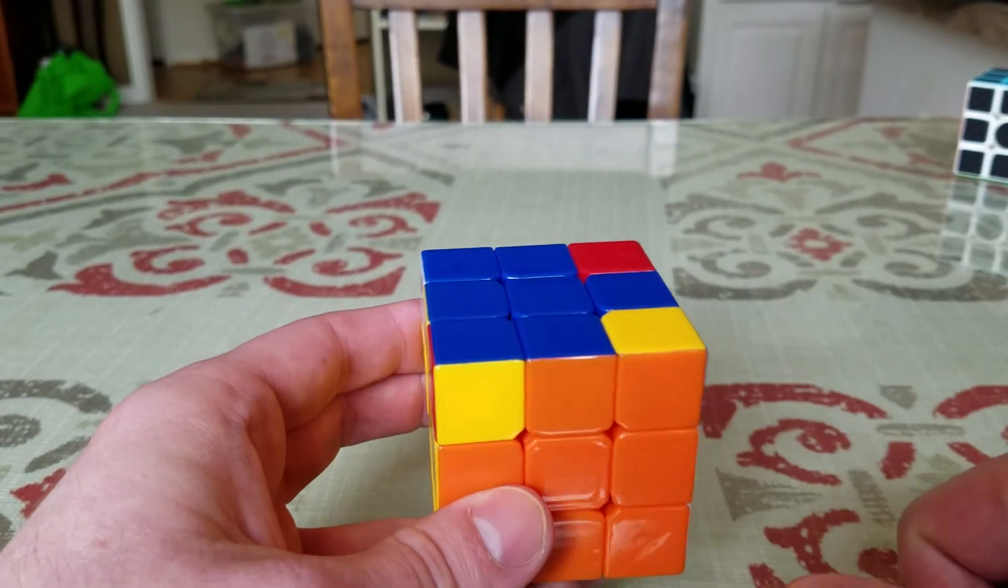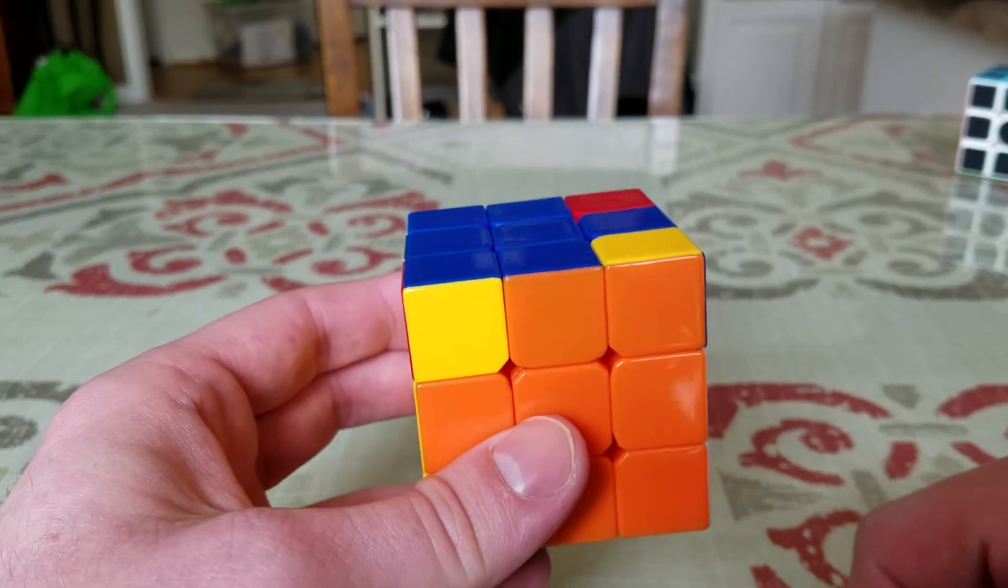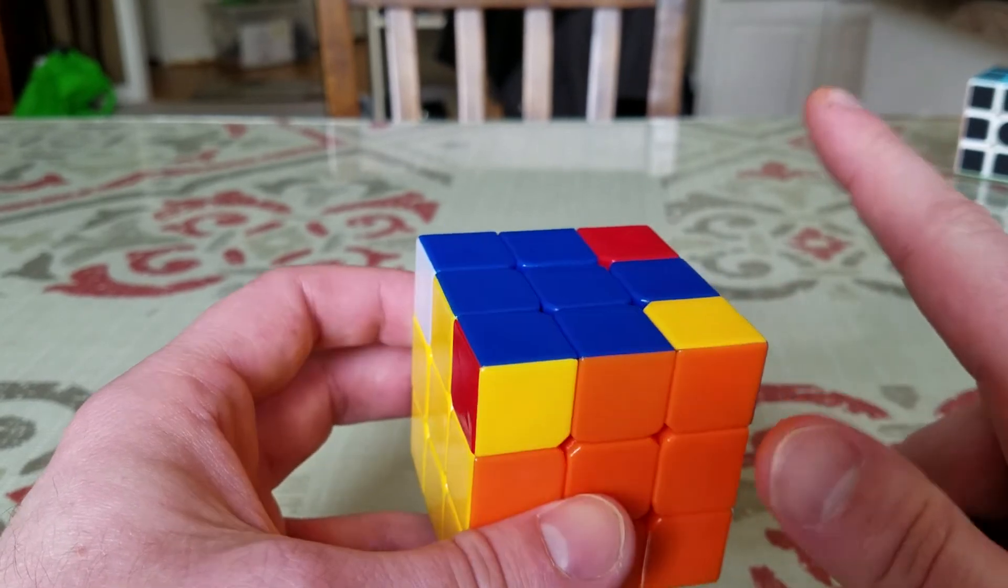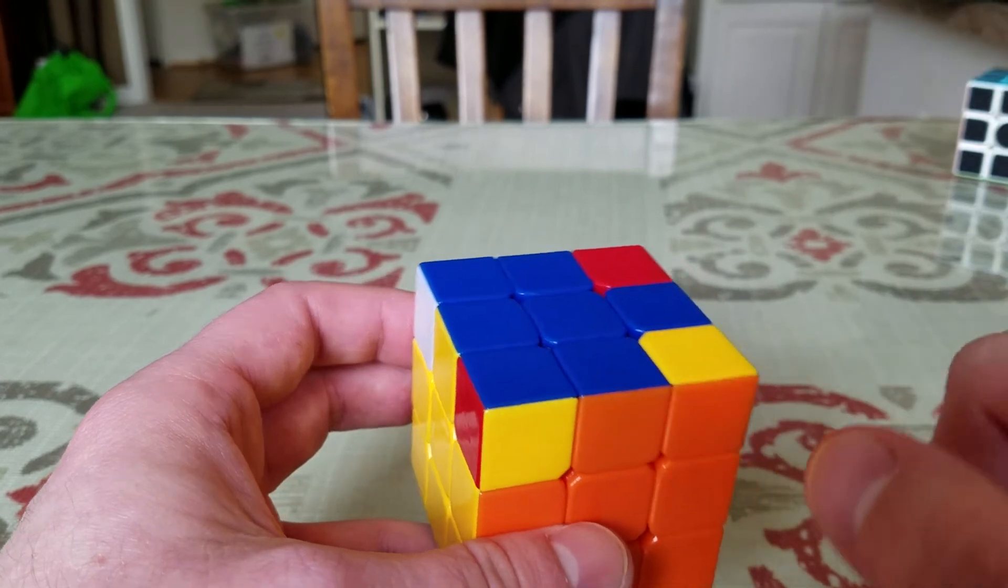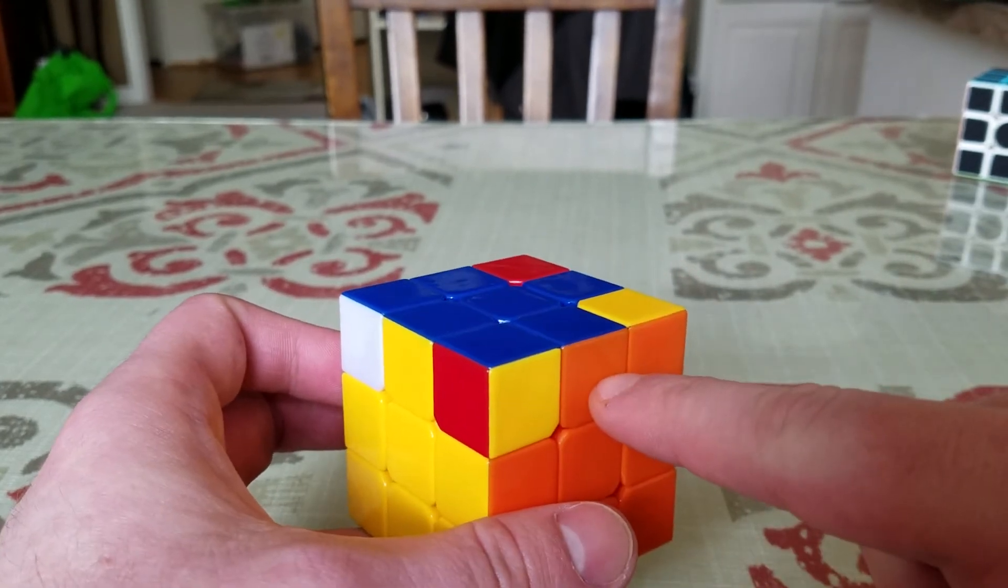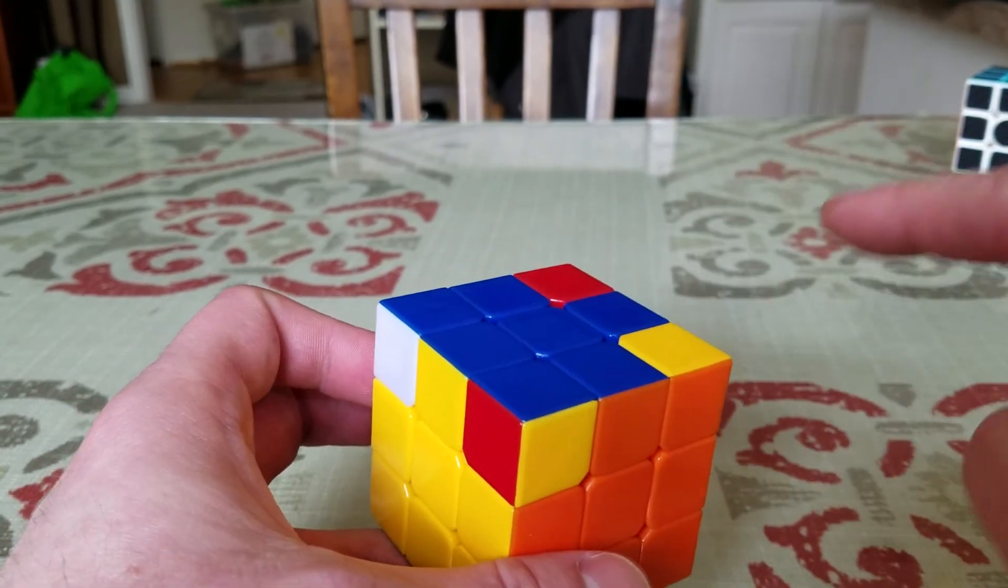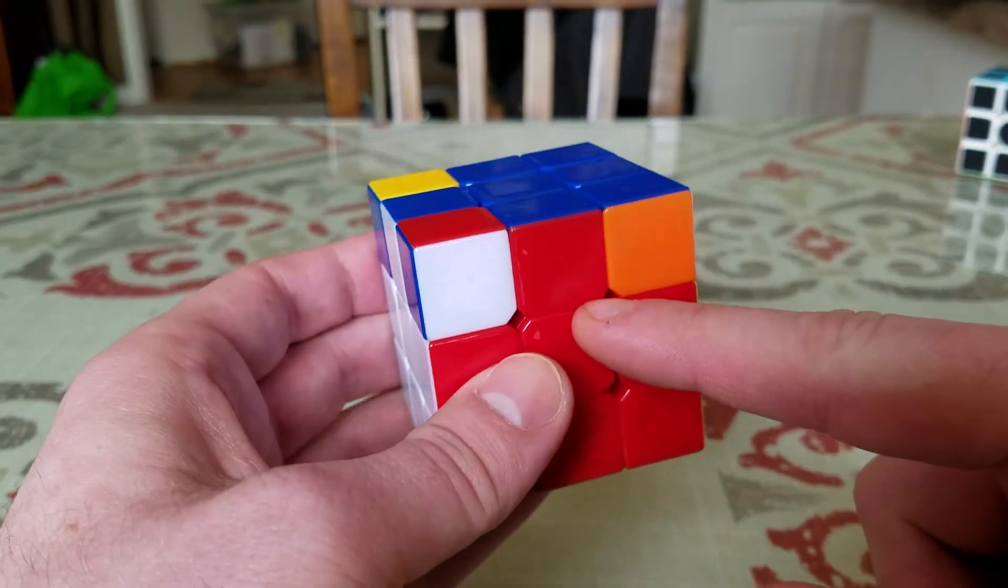perform that same move one time and it will mix up the other corners. Then you will definitely have two adjacent corners that are correct, and you can do the move a second time to solve the other two. At most, you should never have to do this step more than twice.